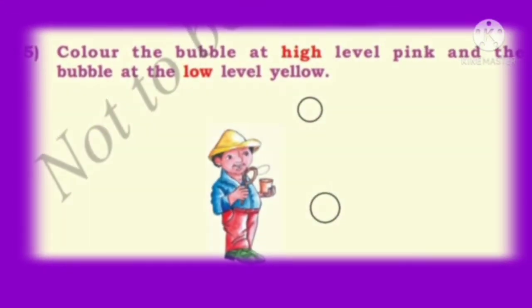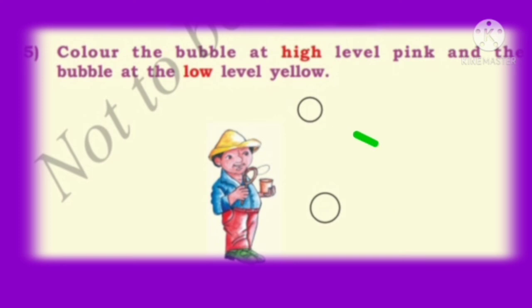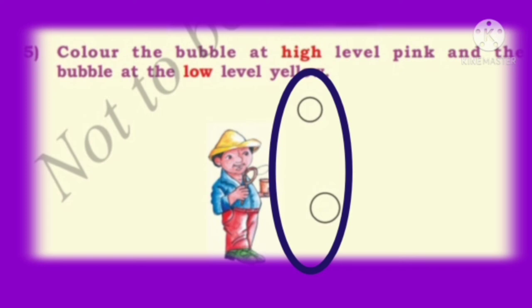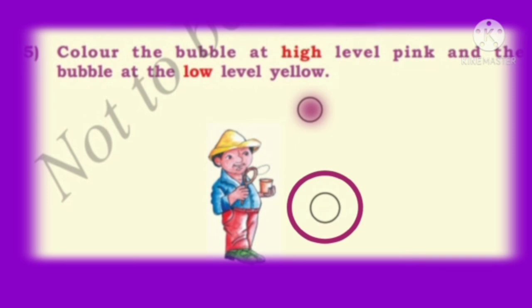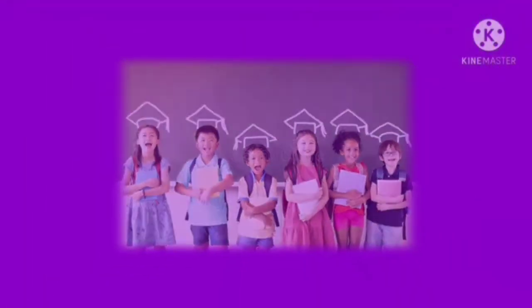Let us colour the bubble at the high level pink and the bubble at the low level yellow. In this picture, we have two bubbles — one is high and another one is low. Which one is high? This one is high, so let us put pink colour. This bubble is low, so let us put yellow colour. Okay children, I hope all understood this lesson. Thank you.